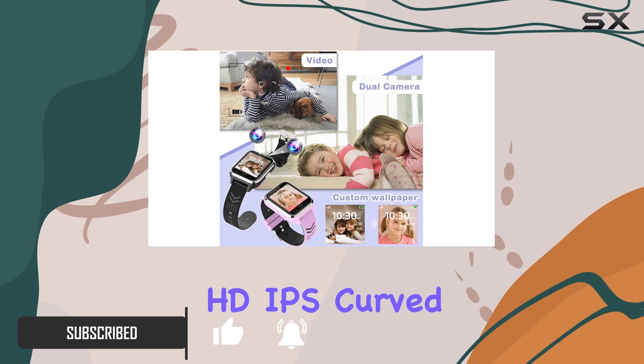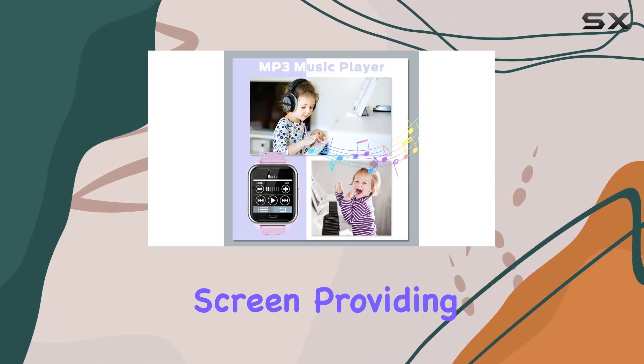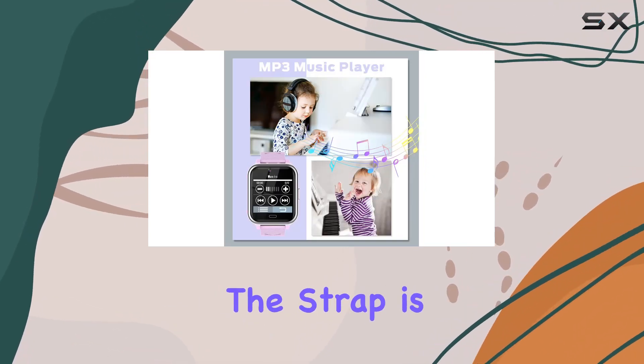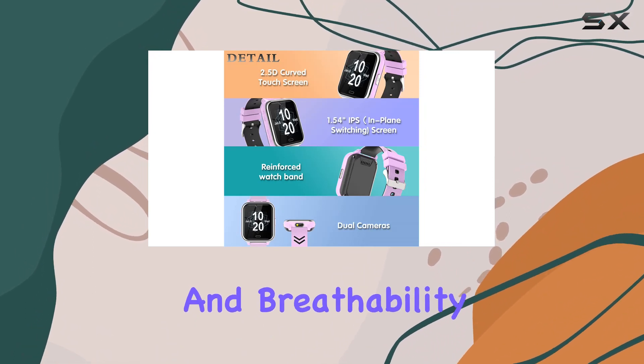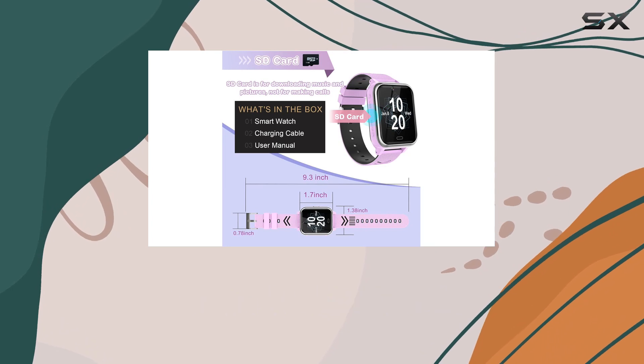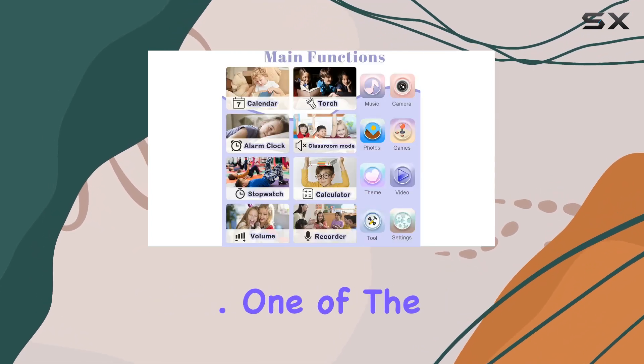The watch boasts a 1.54-inch HD IPS curved screen providing a comfortable touch experience. The strap is made of soft safety silicone, ensuring comfort and breathability for your little ones. No need for a SIM card, making it hassle-free for parents. One of the standout features is the 17 learning games.